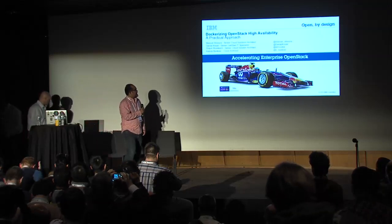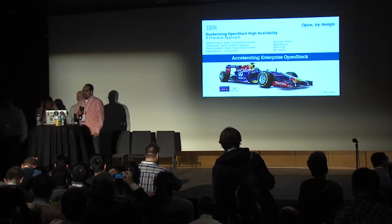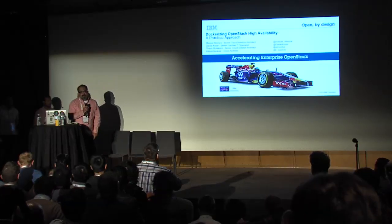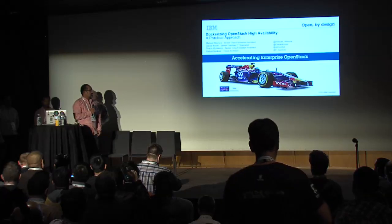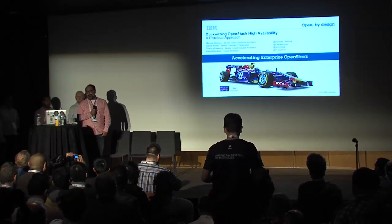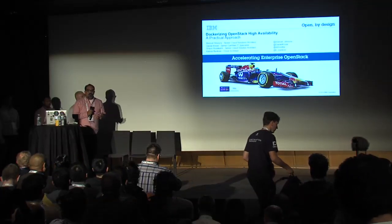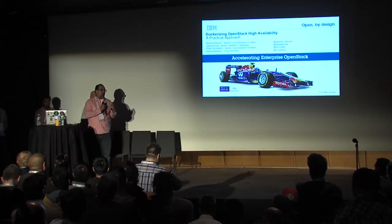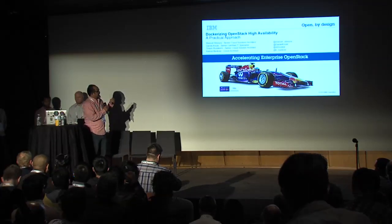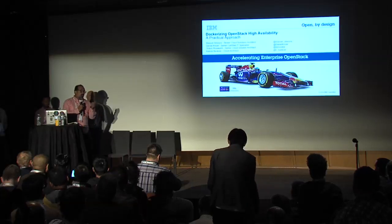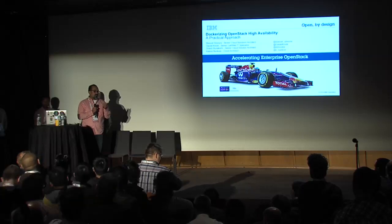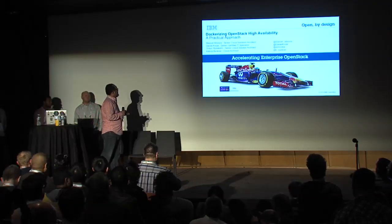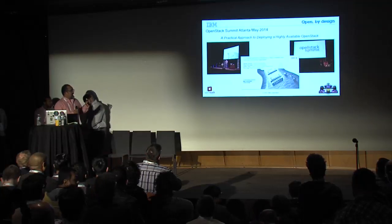Hey guys, we're going to start. My name is Manuel, we have Sean, Kalanji, and Dan here. We're part of IBM and we work in the Open Cloud Technologies. We want to talk about how we use Docker to improve our OpenStack HA. To clarify: this isn't about deploying Docker instances in OpenStack — it's about using Docker to containerize your OpenStack services, for example, Dockerizing Nova.